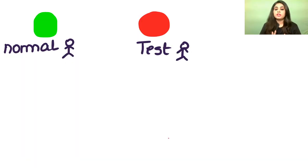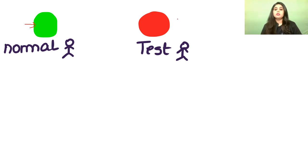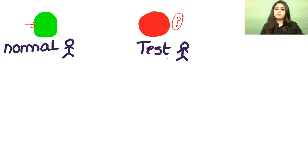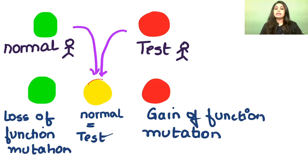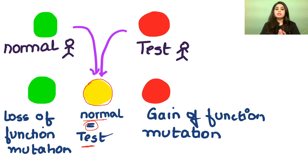If I mix green and red and this test person had no problem at all, I'll get yellow — meaning both have equal gene numbers. If after hybridization you get a red colour, green and red did not mix equally because there was more red, meaning the test person has a gain of function mutation. If you end up getting green, it means the test person had less red — a loss of function mutation.